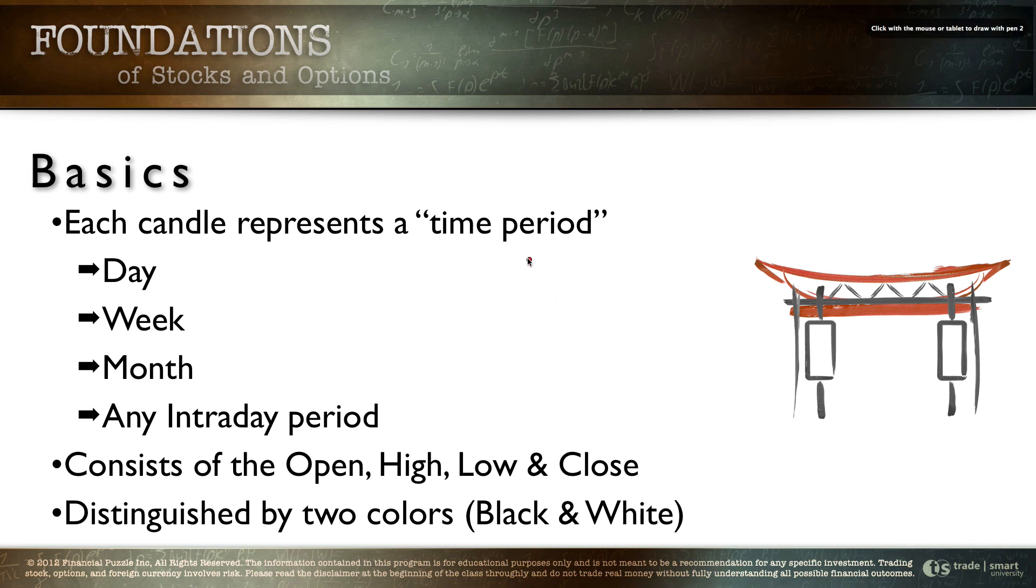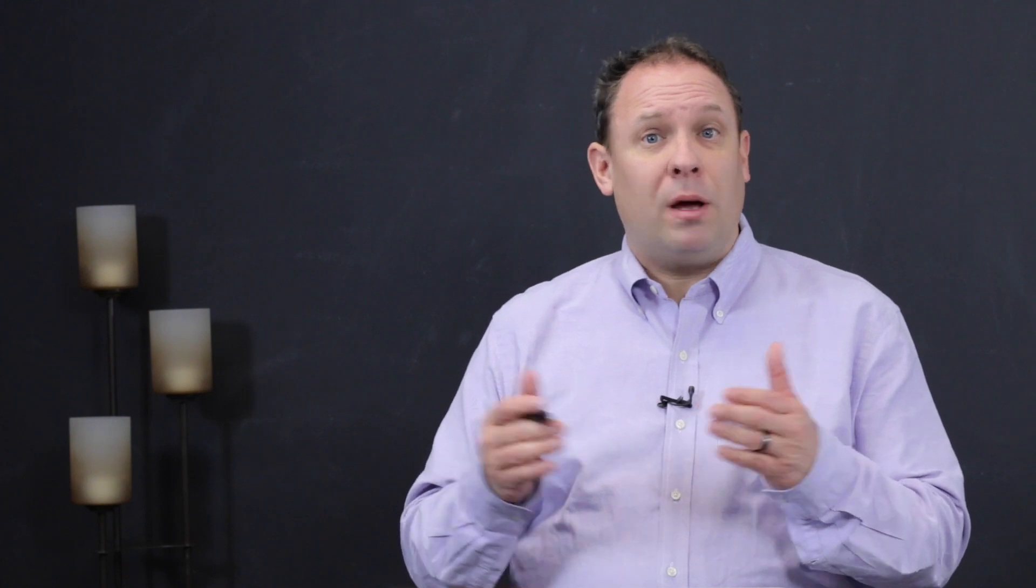As we talk about the basics of candlesticks you need to understand that each candlestick is going to represent an individual time period. Now that could be a day, it could be a week, a month or any of the intraday time periods. Whatever the time frame is on your chart each candlestick will represent one of those time frames. So again if you're looking at a daily chart each candlestick represents a day. If you're looking at a monthly chart each candlestick will represent an entire month's worth of trading activity or let's say you're looking at a five minute intraday chart, each candlestick is going to represent a five minute time period of trading.